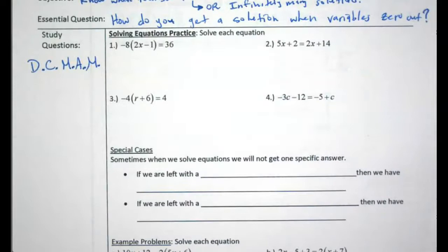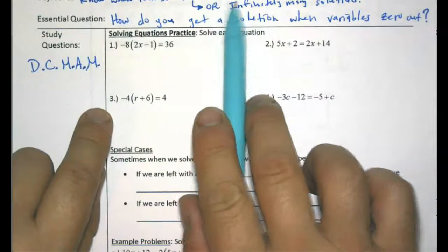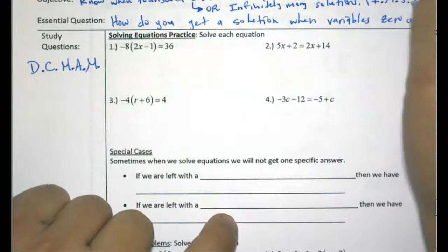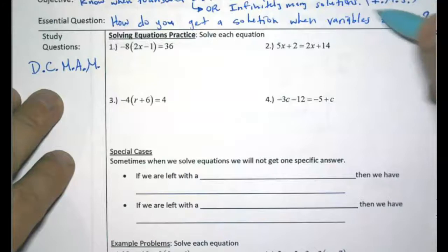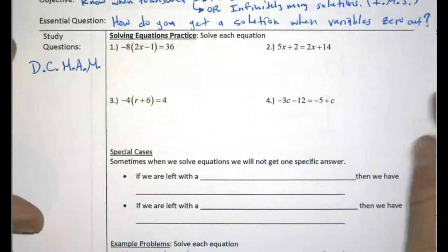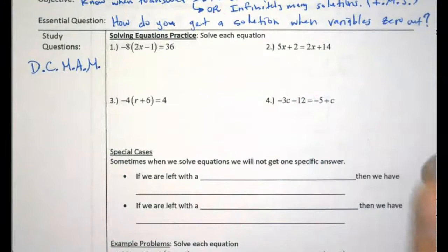Hey guys, so these are the notes for solving multi-step equations, but now we're going to get some special cases — special cases meaning no solution, meaning there's no number that will solve this, or infinitely many solutions, which is also called IMS. Any number could be an answer, which can also be called all real numbers, ARN — so infinitely many solutions or all real numbers are kind of interchangeable. I'm still following the DCMAM order of steps for solving.